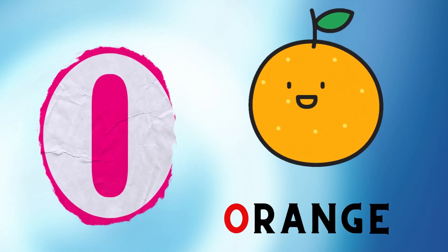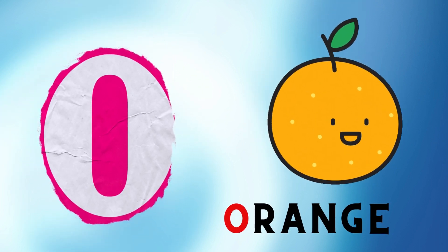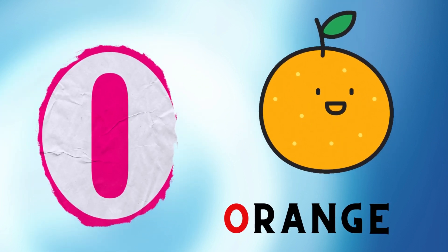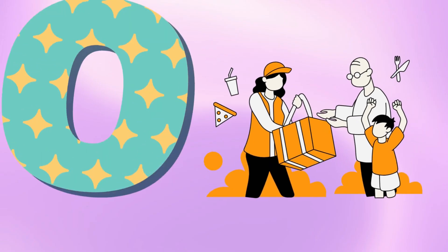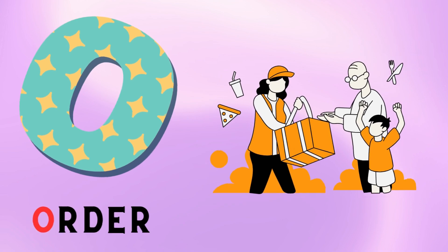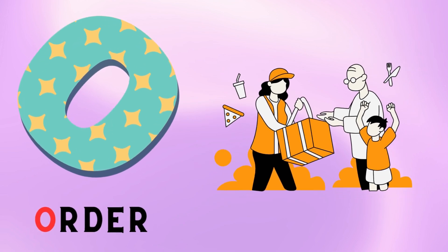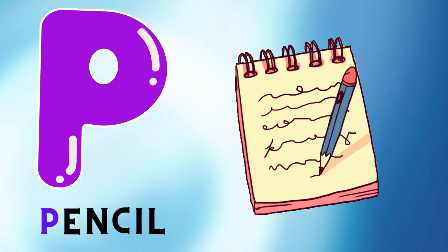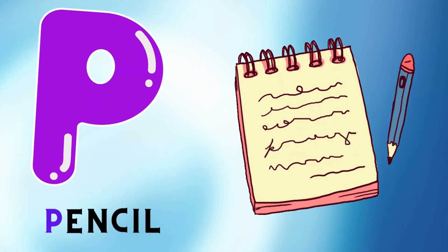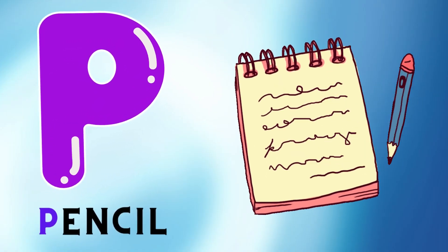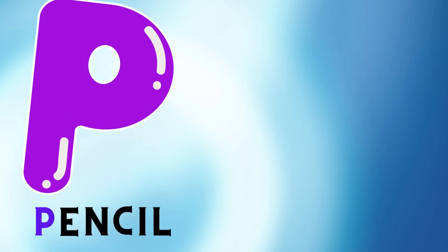O is for Orange. O. Orange. O is for Otter. O. Otter. P is for Pencil. P. Pencil.